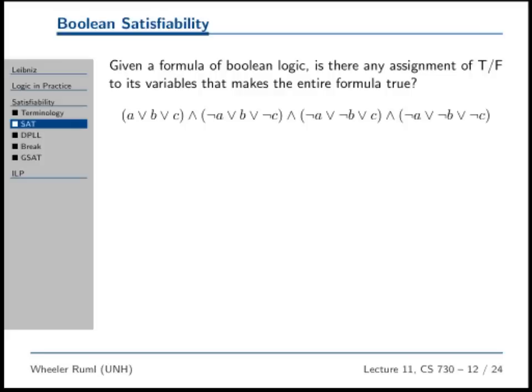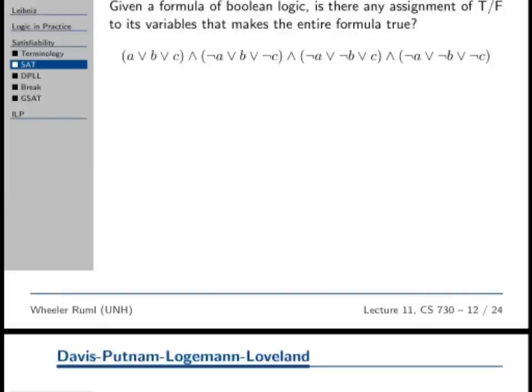Now we have our new formula, and we call DLL on it. After we've done that, if there are no unit clauses, then we have to actually branch on a variable. We pick some variable and first we set it to be true, then we set it to be false. We try setting it to true and see if that works. If so, we're done.